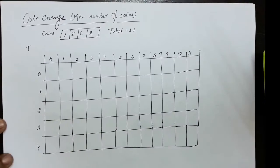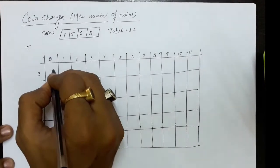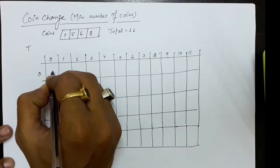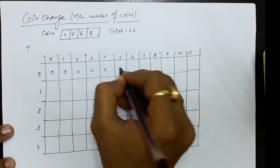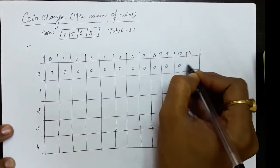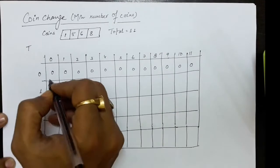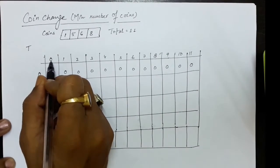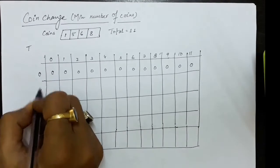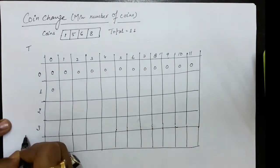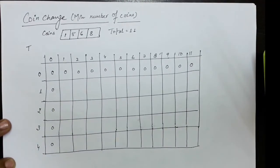We take the additional row and column to hold reference values. For example, if I have a coin of 0 denomination and have to generate 0, there are 0 minimum coins. Similarly, if I have 0 coins and have to generate 1, that denomination cannot be generated. On the column side, if I have to generate 0, then 0 coins are selected regardless of how many coin types are available. These are the reference values.